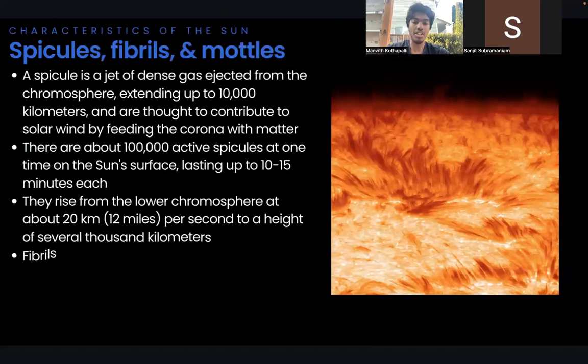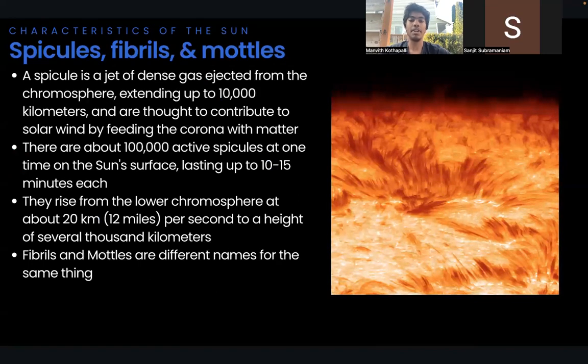Now, let's talk about spicules and fibrils. A spicule on the sun is a jet of dense gas ejected from the sun's chromosphere and occurs at the edges of the chromospheric network where magnetic fields are stronger. They can extend up to 10,000 kilometers or 6,000 miles, and although they fall back into the sun, are thought to contribute to the solar wind by feeding material into the corona.